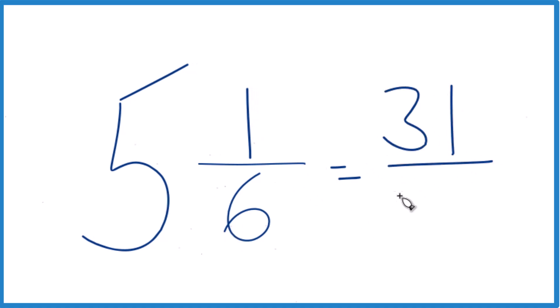We just bring the denominator, 6, across, and that's our improper fraction, 31/6, for the mixed number 5 and 1/6.